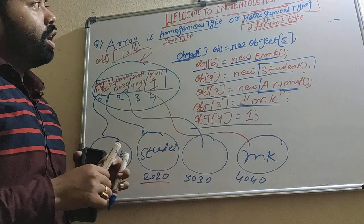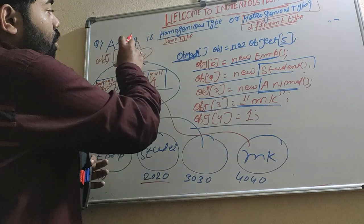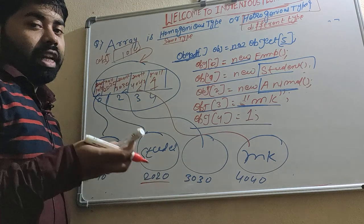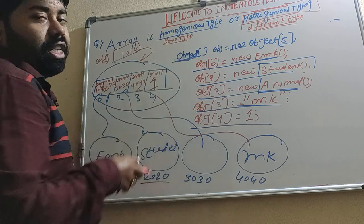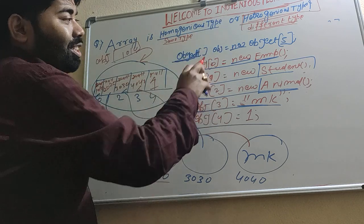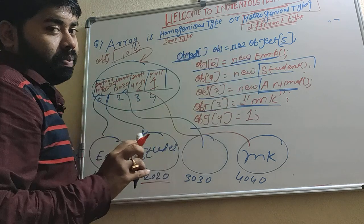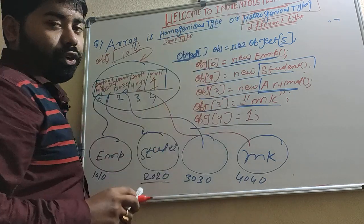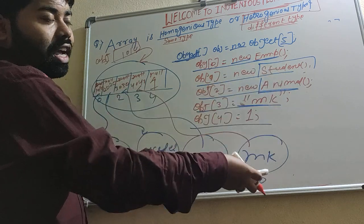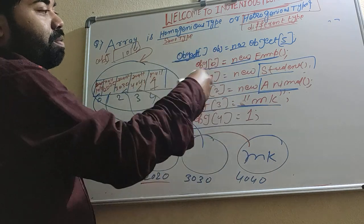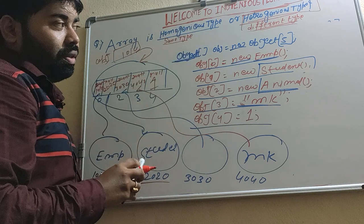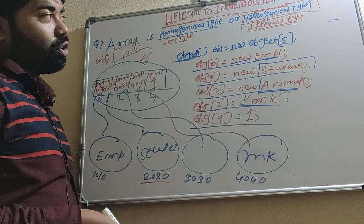So this behavior is called heterogeneous type. What is the conclusion? Array is homogeneous or heterogeneous type depending on which type of array you create. If you create an Object type array, this behavior is called heterogeneous type — meaning inside the Object array you can store multiple types of objects, any type. If you create a same type array like Employee type, Animal type, or Student type, then you cannot store different types. That behavior is called homogeneous type. I hope you have a clear picture about homogeneous and heterogeneous.